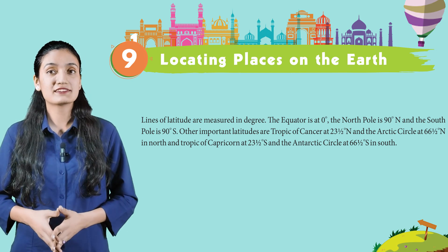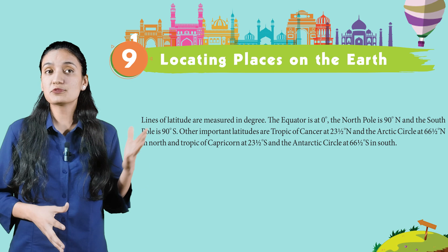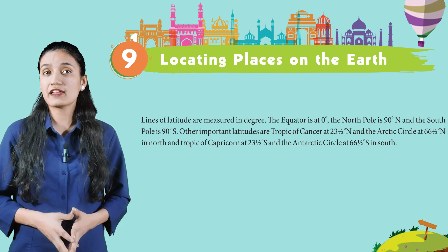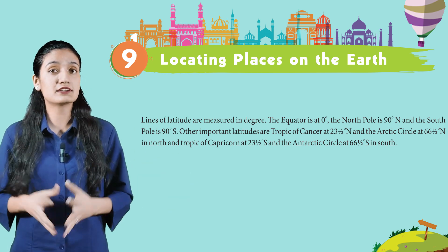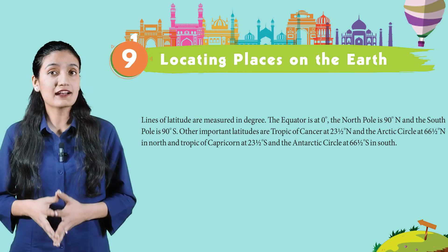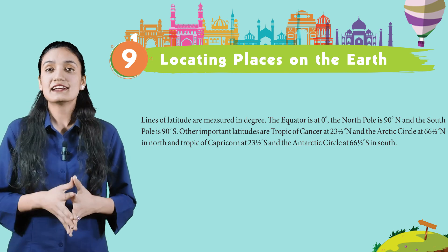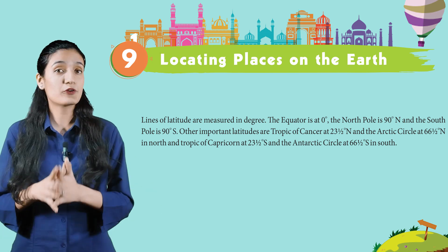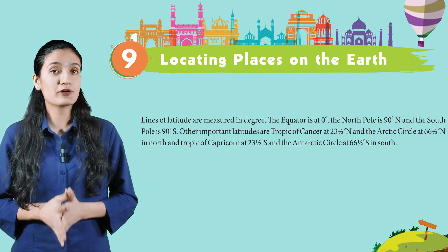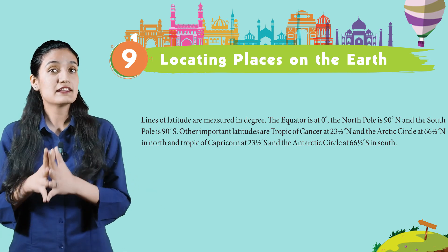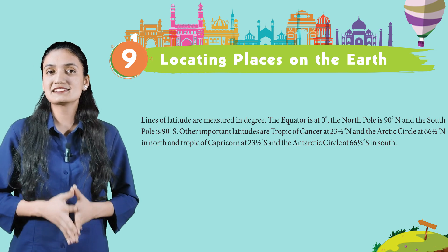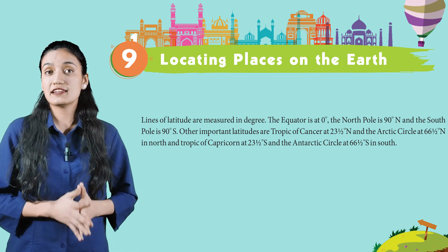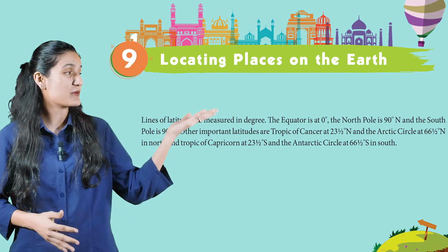Lines of latitude are measured in degrees. The equator is at 0 degrees. The North Pole is at 90 degrees North and the South Pole is at 90 degrees South. Other important latitudes are the Tropic of Cancer at 23.5 degrees North and the Arctic Circle at 66.5 degrees North, and in the south, the Tropic of Capricorn at 23.5 degrees South and the Antarctic Circle at 66.5 degrees South.